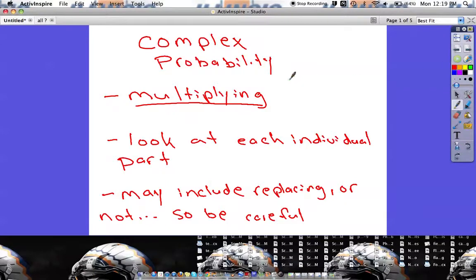Alright, for the last section of our probability stuff, we're going to move on to more complex probability - probability with many different events and many different things happening at one time. This could be two events, it could be ten events happening at one time, so you'll just have to kind of keep on your toes here and figure out what's going on.